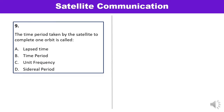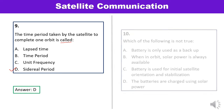Question 9: The time period taken by a satellite to complete one orbit is called? You can pick this answer very quickly — it is the sidereal period.